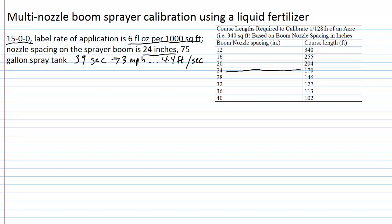We're not going to use it in our calculation, but that's what we've determined is 39 seconds is required to go from point A to point B to cover a 170-foot course length. Then we take that known time, 39 seconds, and we'll capture the sprayer output from a single nozzle. We do that, we collect it for 39 seconds, and we have captured, for the purpose of our example, 40 fluid ounces.